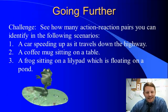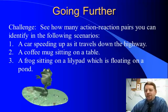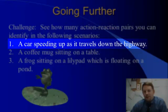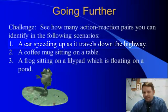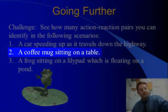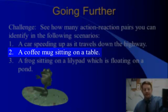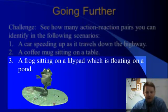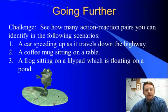Let's see if you can take it a little further — see how many action-reaction pairs you can identify in each of the following scenarios. Number one: a car speeding up as it travels down the highway. Number two: a coffee mug sitting on a table. And number three: a frog sitting on a lily pad which is floating on a pond. How many action-reaction pairs can you find? Good luck, and if you have any questions or need more help, check out aplusphysics.com. Thanks and have a terrific day.